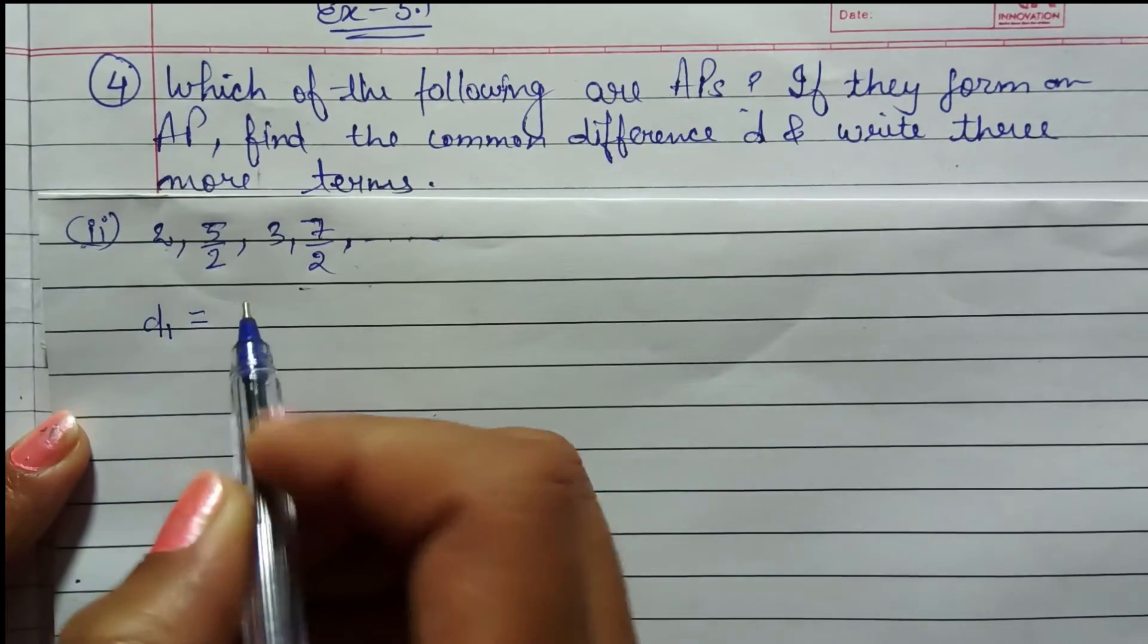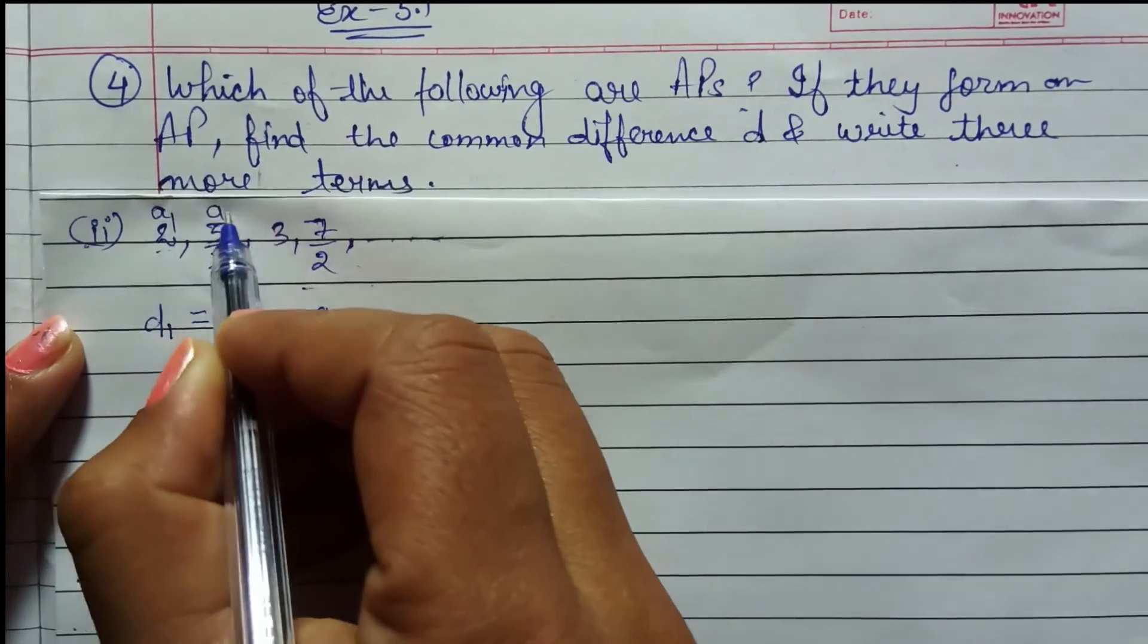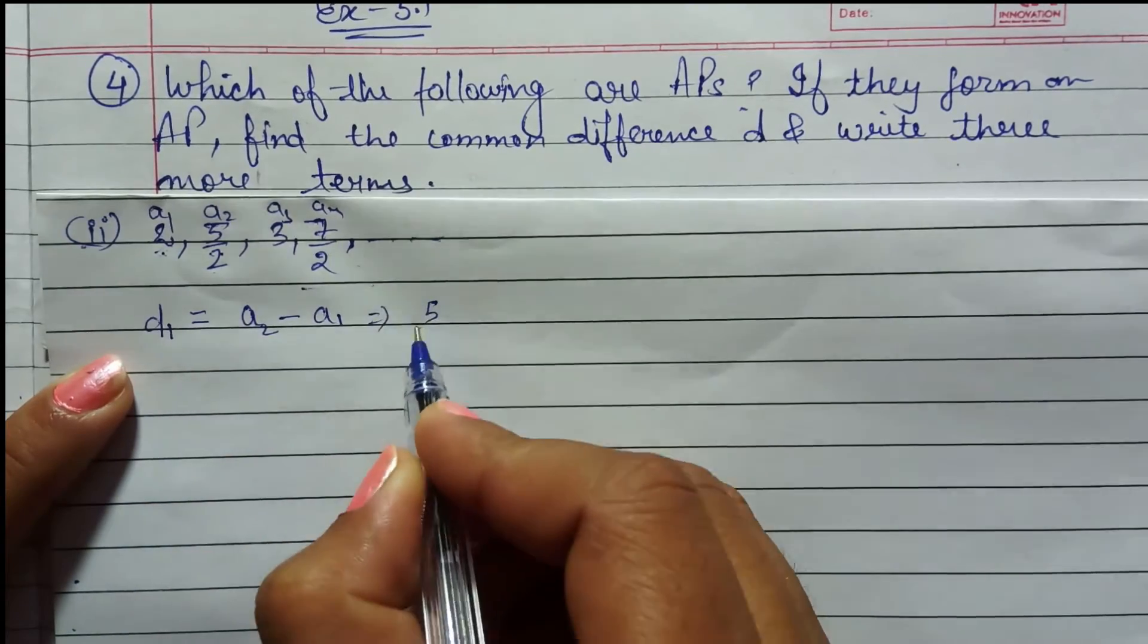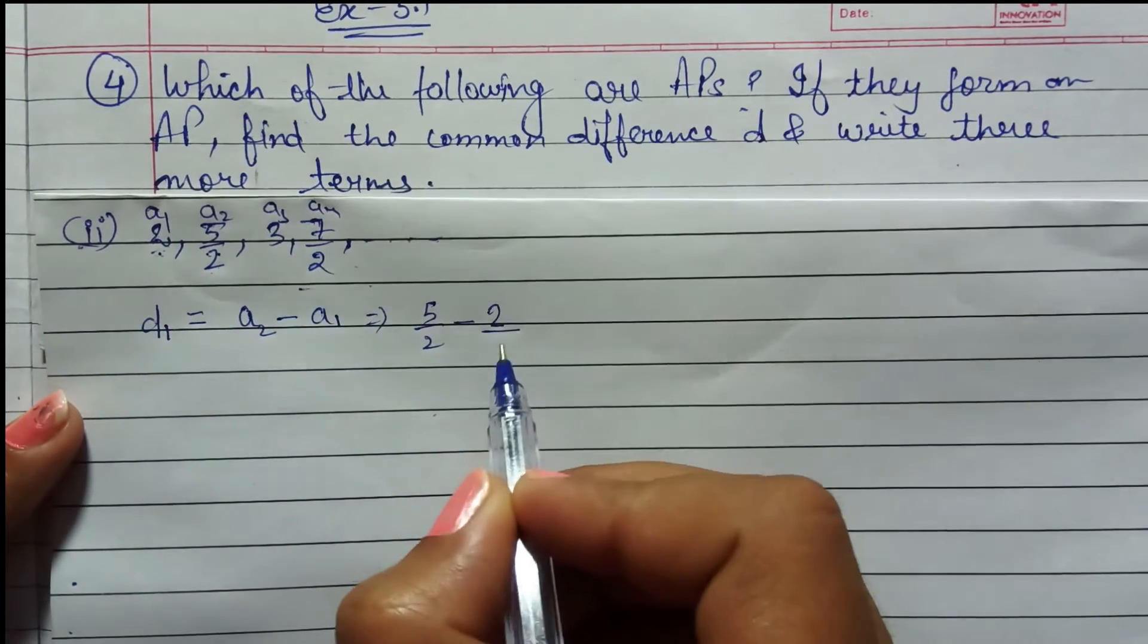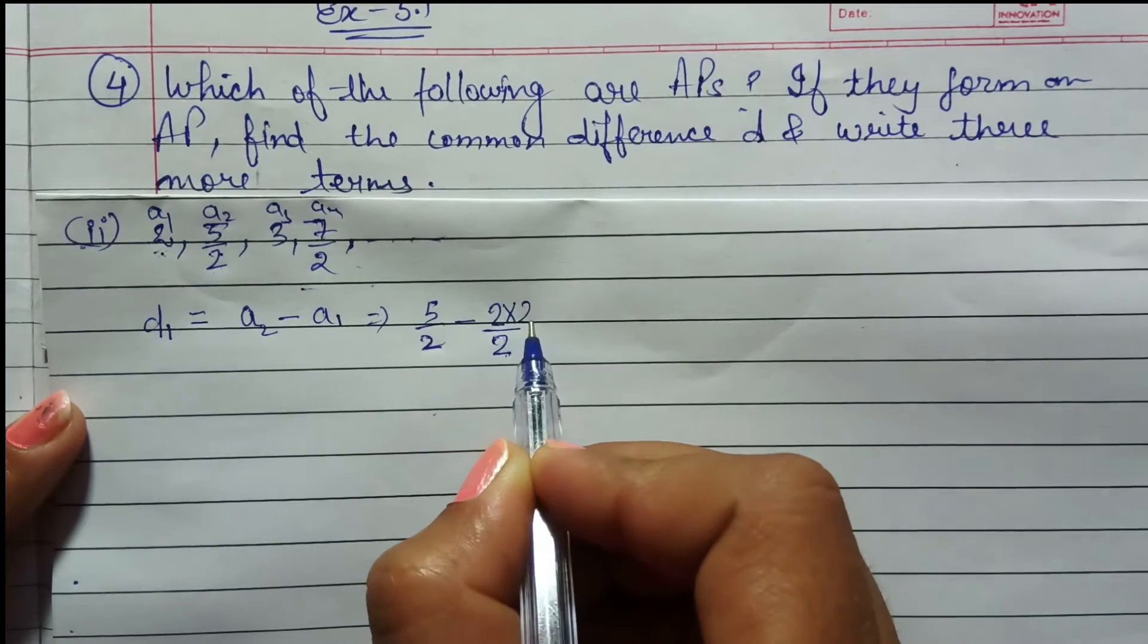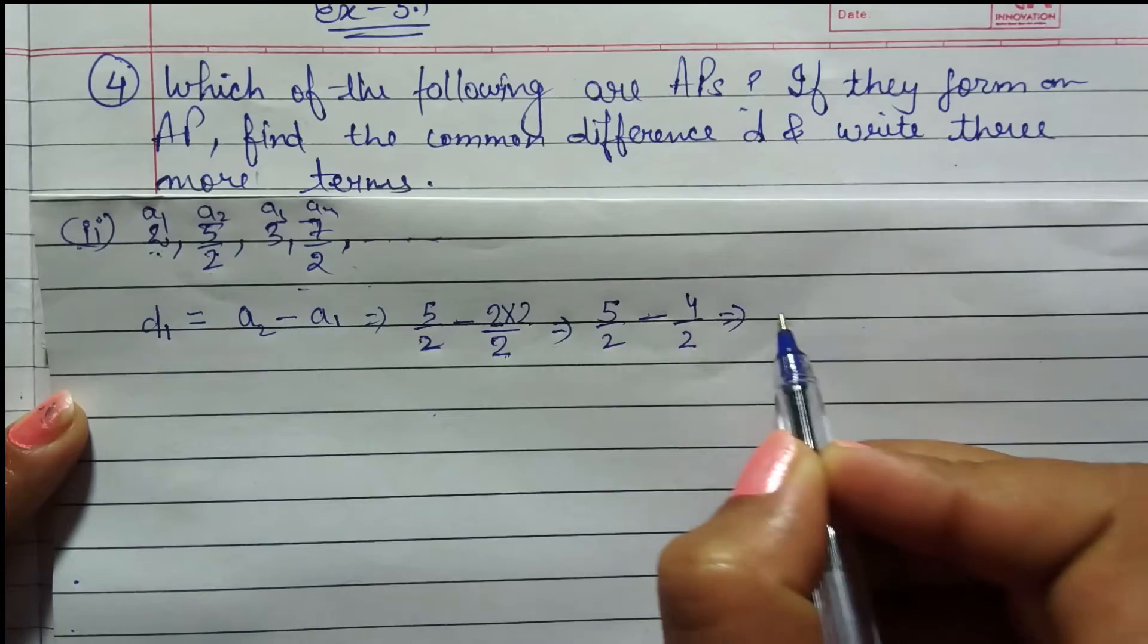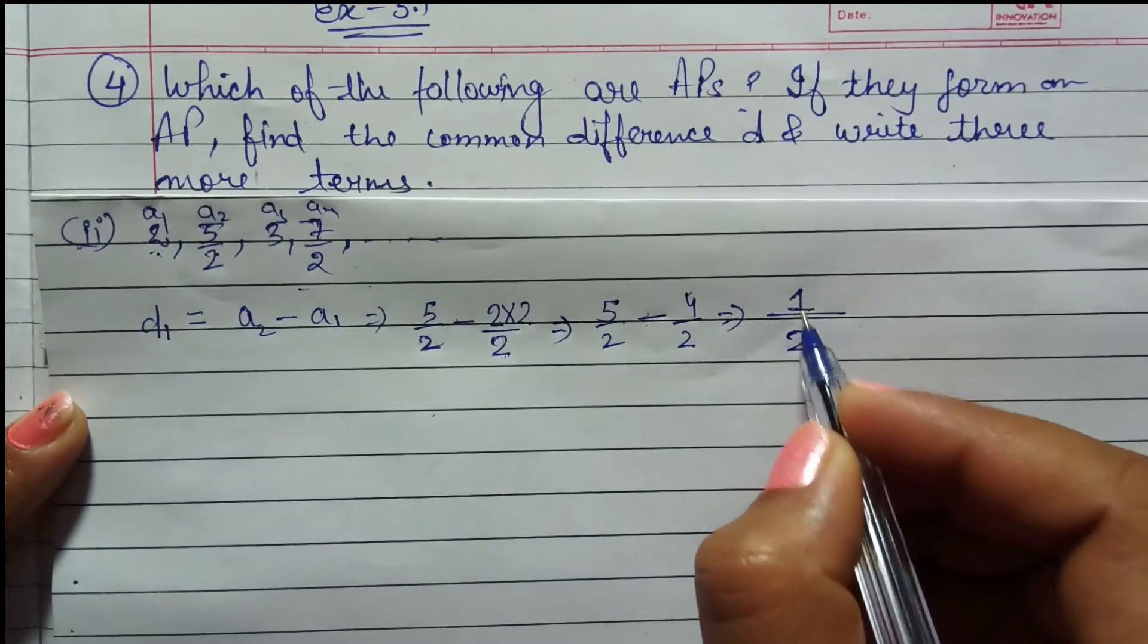First of all, we will denote the first two terms of difference. We will calculate A2 minus A1. In AP, A1, A2, A3, A4, like you can write. So D1 is first two terms of difference. That is A2 minus A1. A2 what is it? 5 by 2 minus A1 what is it? 2. Now we will solve it. We will do the denominator same. So we will multiply the denominator. Now what is it? 5 by 2 as it is minus 2 to the 4 by 2. Now this calculation is easy to take. So 1 by 2 is D1.